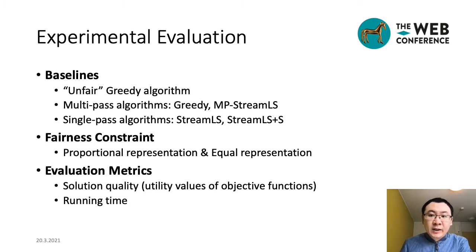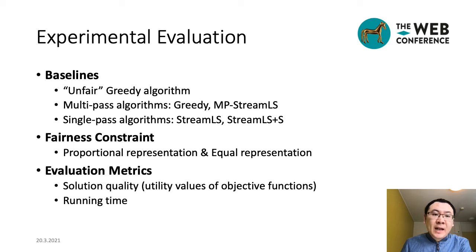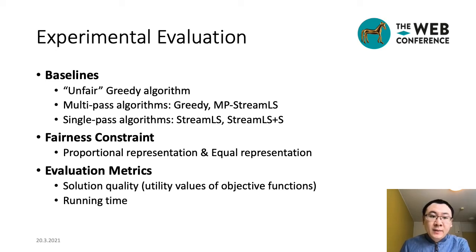The last part is our experimental evaluation. We compare our proposed algorithms with different baselines, including the unfair algorithm, the state-of-the-art multi-path streaming algorithms, and the state-of-the-art single-path streaming algorithms. We also use different concepts of fairness in our experiments, including both proportional representation and equal representation. For the evaluation metrics, we use both solution quality — the utility values of the objective functions — and running time for comparison.